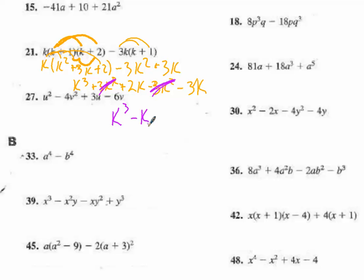How do I factor this? I go through my factoring checklist, and the first thing I have to do is factor out the greatest common factor. So k gets sent out to the curb, and we have k squared minus 1.